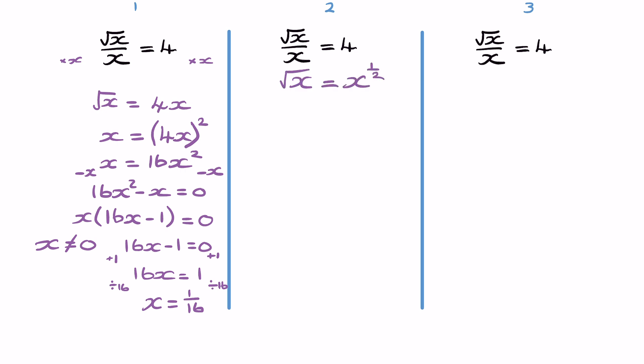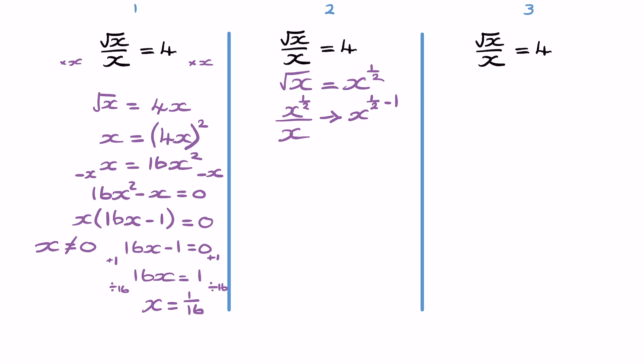And then I have x to the power of a half divided by x. And so what I have here is x to the power of half divided by x to the power of 1. And when we divide, we subtract the indices. So that gives us x to the half minus 1, and that will be x to the negative half.